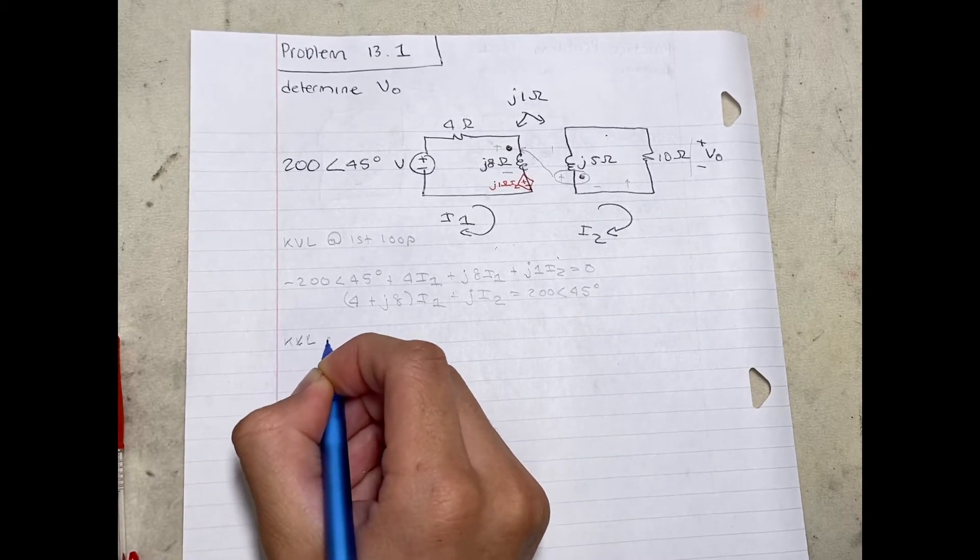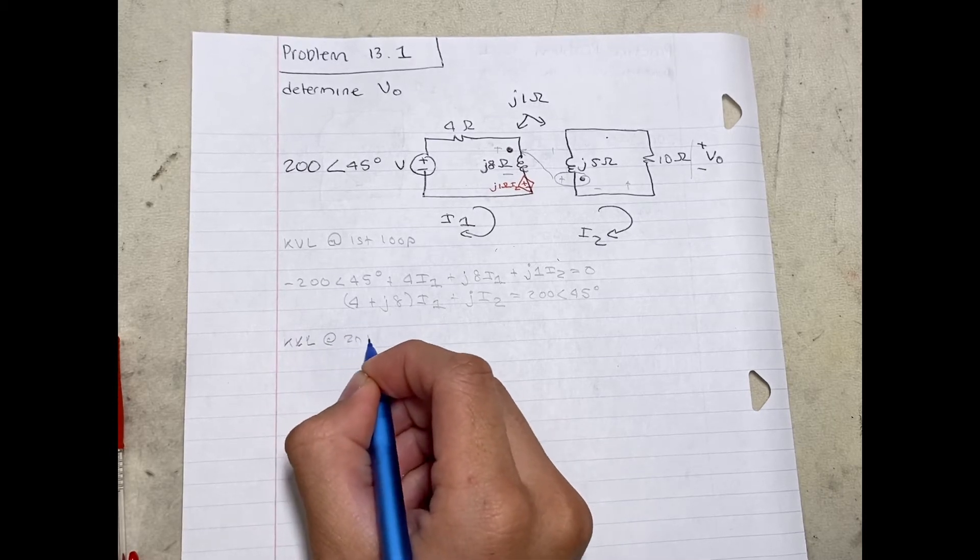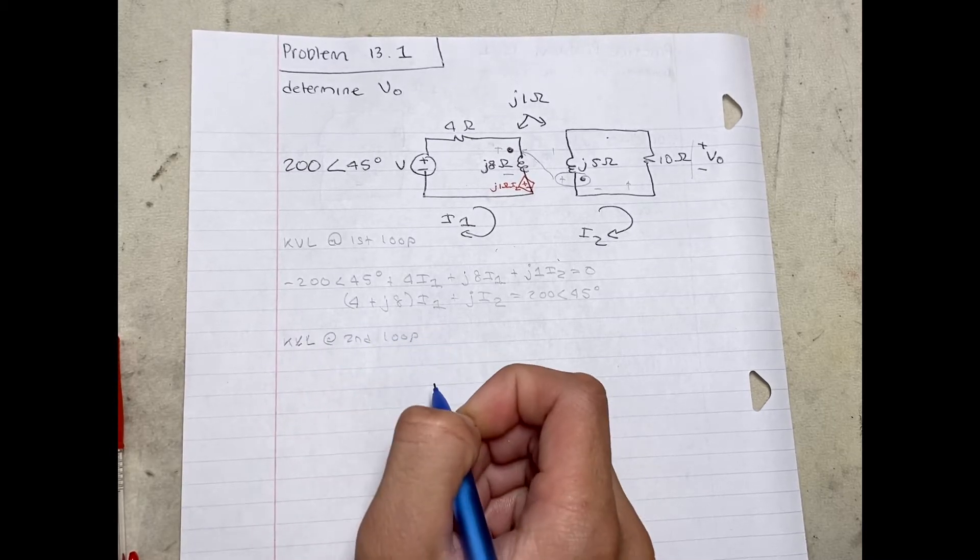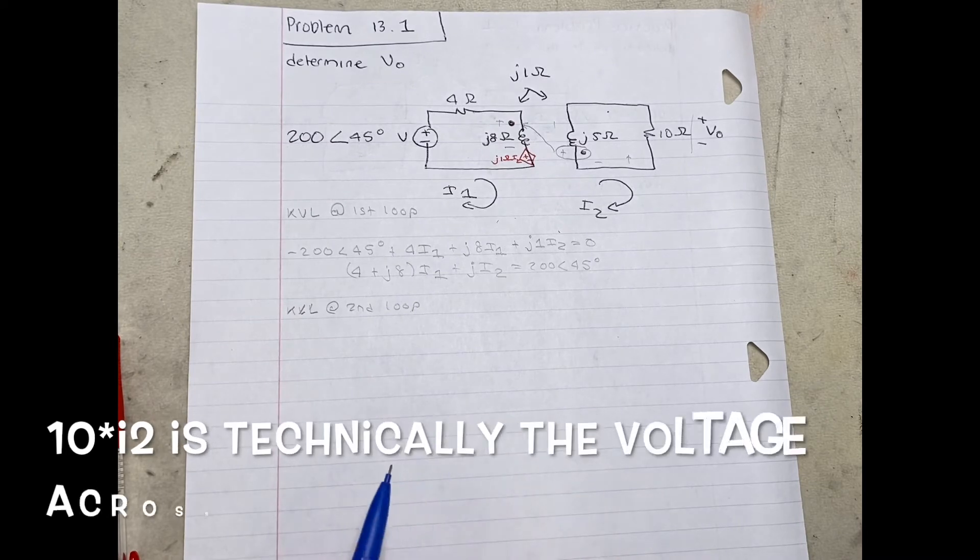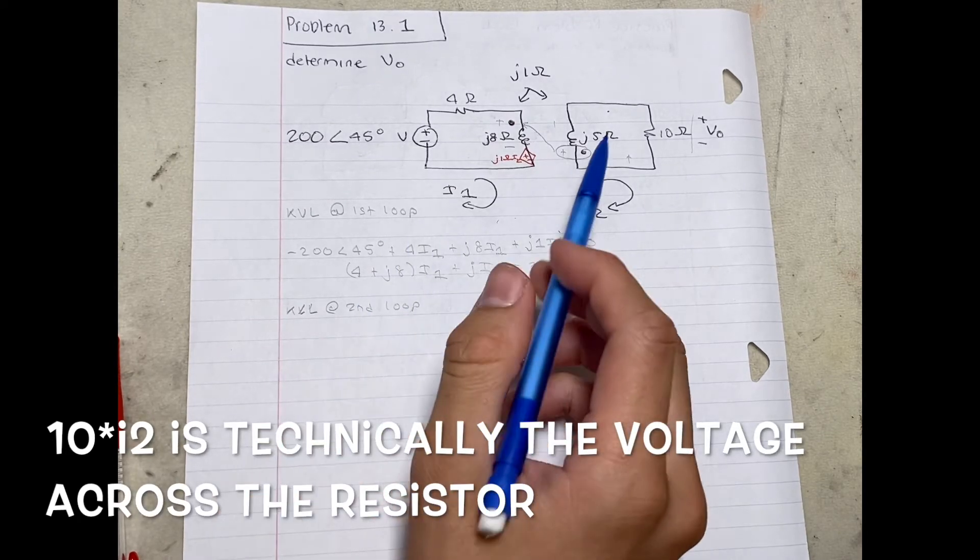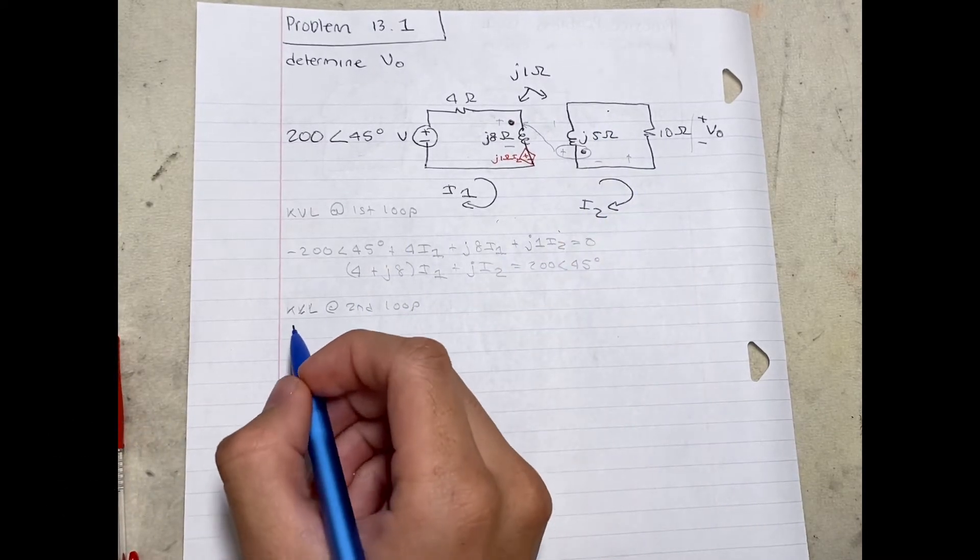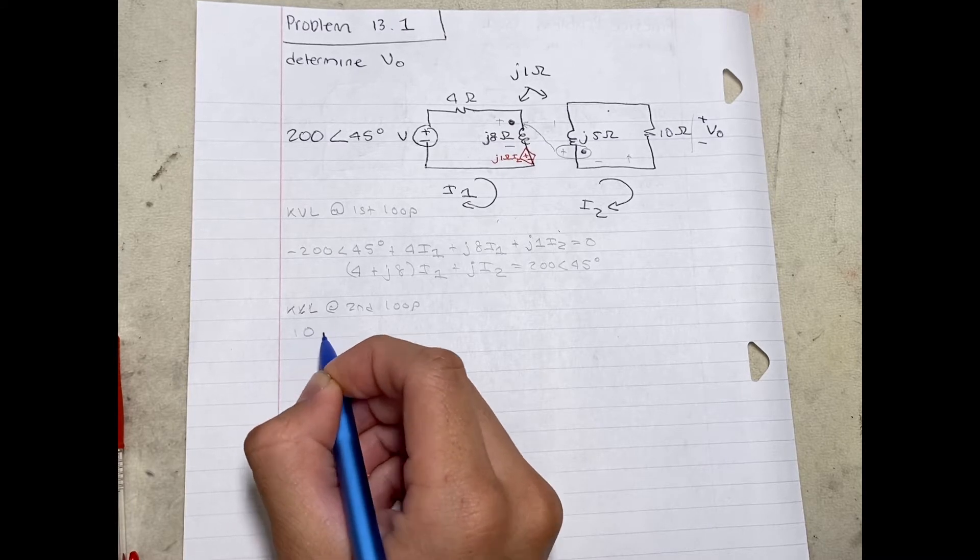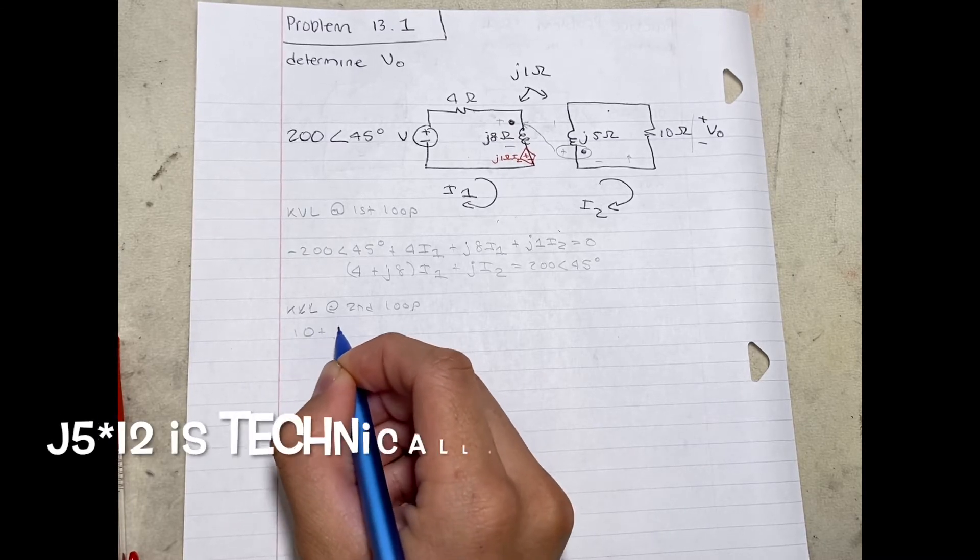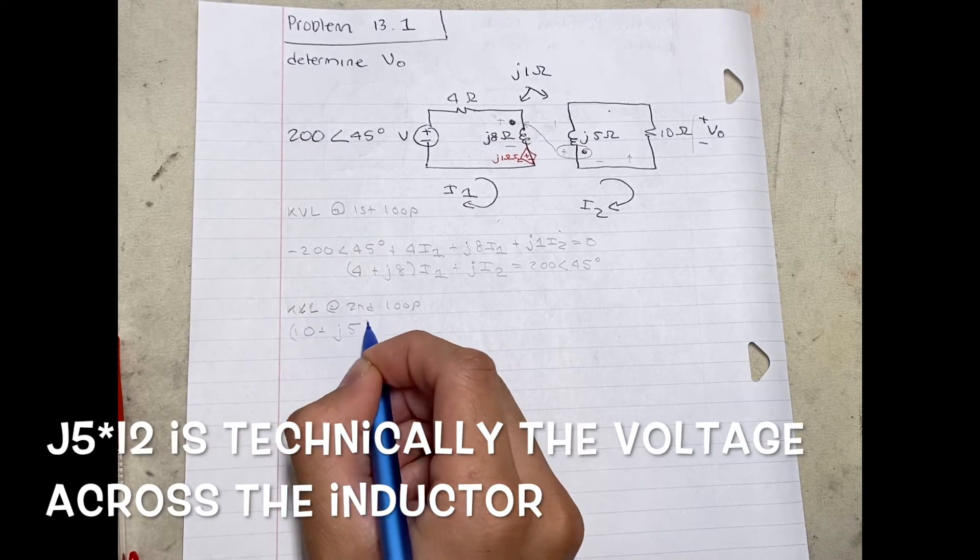Next, I'm going to perform a KVL at the second loop. So if you look above, it's going to be 10, which is the voltage across the resistor, plus J5, which is the voltage across the inductor in the second loop, all times I2.